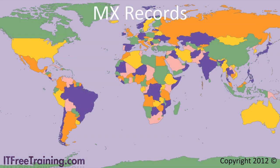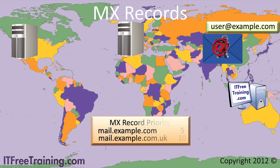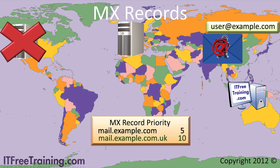Consider this example: there is an email server in the USA and one in the UK for the same company, connected by a high-speed link. A client attempts to send an email to the example.com domain. The first MX record for example.com has a priority of 5 — if the mail server can be contacted in the US, the email will be sent straight to this server. If the server cannot be contacted or is down, the next MX record with the higher priority will be read — in this case mail.example.com.uk with a priority of 10. Each server acts as a backup for the other.